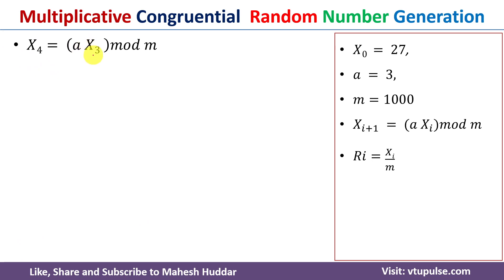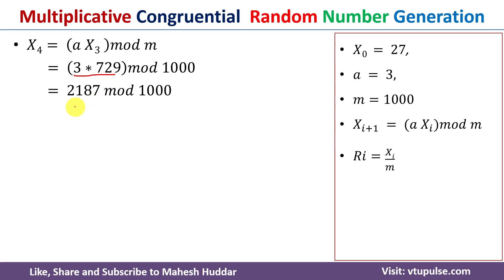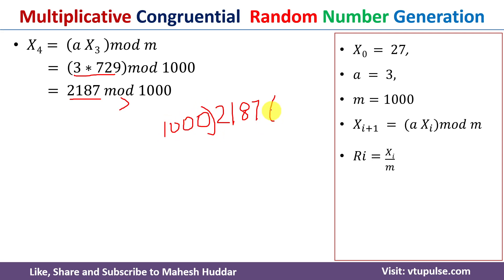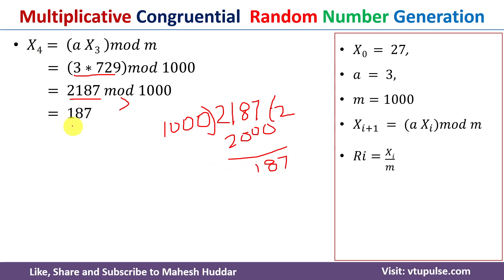X₄ = a · X₃ mod m. Here a = 3, X₃ = 729, m = 1000. So 3 × 729 = 2187, which is greater than 1000, so we need to calculate the remainder. 2187 divided by 1000: 1000 × 2 = 2000; 2187 − 2000 = 187. So the remainder is 187, therefore X₄ = 187.